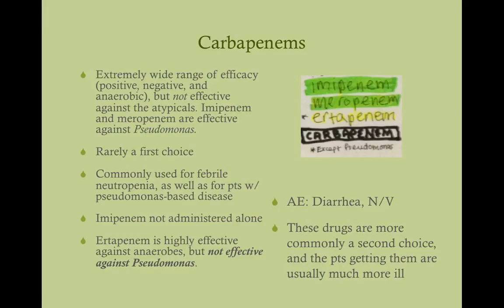Carbapenems are not commonly used, and the reason is because they're so darn effective — we don't want bugs to develop resistance to these since they're sort of our silver bullet. They cover pretty much everything, but the one thing they don't cover is atypicals. They are effective against Pseudomonas with the exception of ertapenem. So we have imipenem, meropenem, and ertapenem — imipenem and meropenem both cover Pseudomonas, ertapenem does not. A common use is in patients with febrile neutropenia.